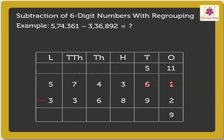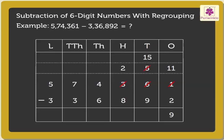Now subtract 9 from 5. As there are not enough tens, regroup 3 hundreds and 5 tens as 2 hundreds and 15 tens. Therefore, 15 minus 9 is equal to 6.